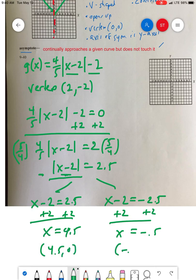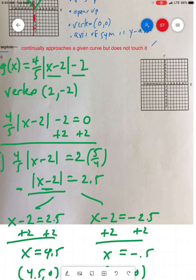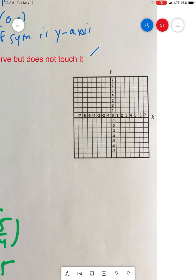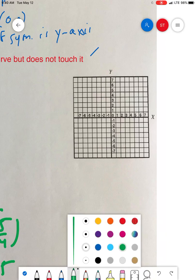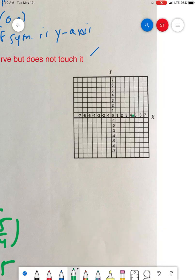I think we'll graph those two things. The x-intercepts were 4.5 and negative 0.5. So one, two, three, four point five, and negative 0.5. Then the vertex was (2, -2). Right now you could just with a straight line play connect the dots, and there's our graph.